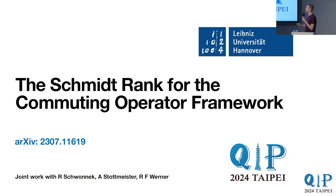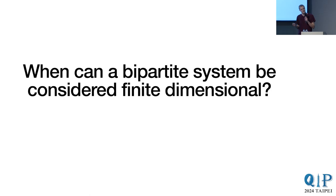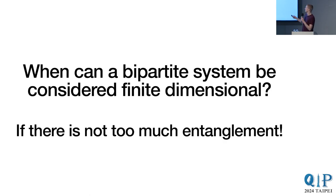So what's this about? It's about entanglement theory, and we want to answer the basic question: when can we consider a bipartite system finite-dimensional? When can we use finite-dimensional matrix quantum info to describe the correlations in it? To answer this question, we need to step outside of the usual framework. The answer is: if there's not too much entanglement. We'll make this more rigorous, and for that we'll introduce the Schmidt rank.